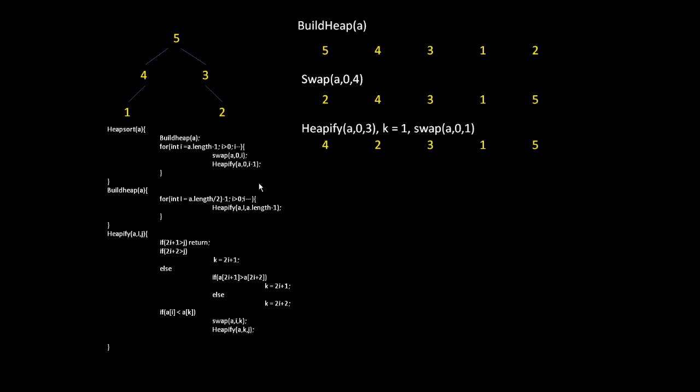Then you will be asked to call heapify again. You will pass through the elements at 1 and 3. The k will be set to 3. Then you will find that you can't do anything. You don't have to continue after that.